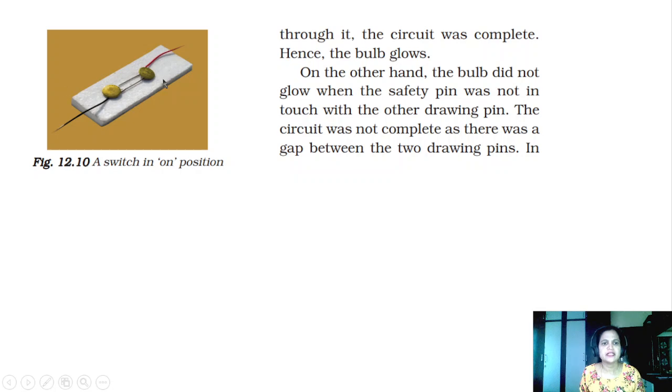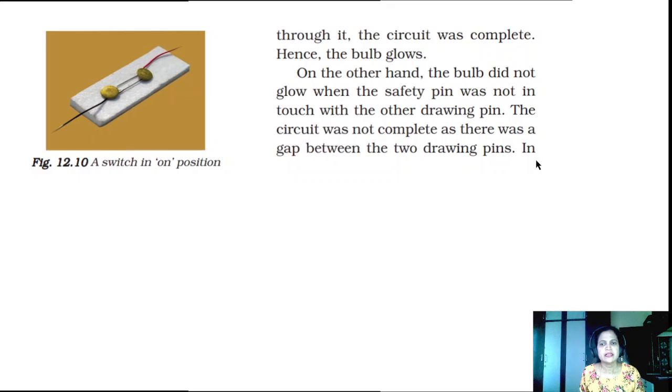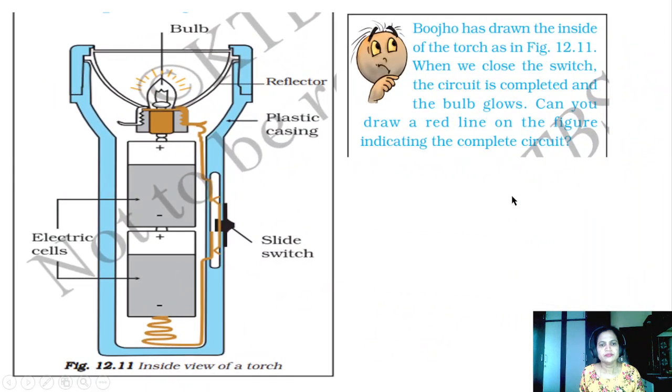If it is fixed like this, continuously the current will flow through it. The circuit was complete, hence the bulb would glow. On the other hand, the bulb did not blow when the safety pin was not in touch with the other drawing pin. The circuit was not complete as there was a gap between the two drawing pins.